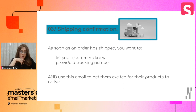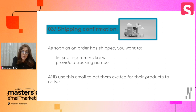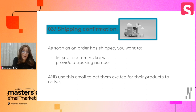Email three: shipping confirmation. As soon as the order ships, let your customers know — you'd be surprised how many brands don't do that. Provide a tracking number, and use this email to get them excited for their product to arrive. Make them feel like something's coming, look out for it. Some brands do this really well, some don't — but you might as well use it to build that excitement.